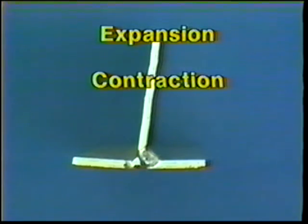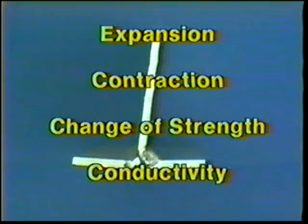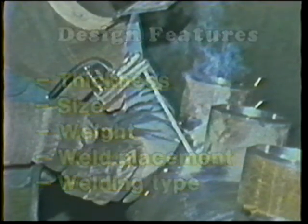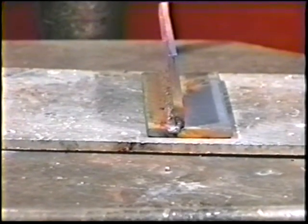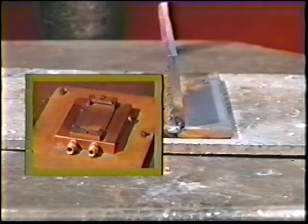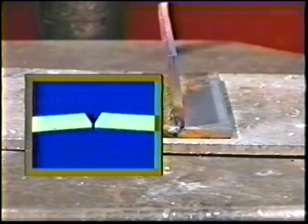In summary, heat of welding causes distortion due to forces built up from a combination of metal characteristics. Expansion and contraction, change of strength, and conductivity set up forces which distort metal. The design features of the weldment influence the action of the forces — metal thickness, overall size, overall weight, placement of welds, and type of welding. By understanding how distortion forces act, a welder can minimize distortion by keeping the forces as low as possible through intermittent welding, balancing them against each other, using restraining fixtures or many tack welds, using heat sinks for fast cooling, and presetting the work pieces.